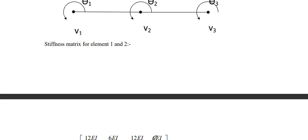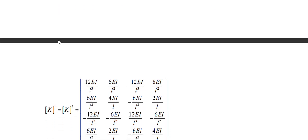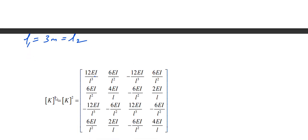Now we have to calculate the stiffness matrix for each element. We have two elements — element 1 and element 2. Both elements have the same length: L1 equals L2 equals 3 meters. So we can make K1 equal to K2 because the length is the same. This is the stiffness matrix for element 1, and this is for element 2.